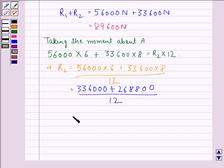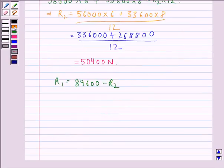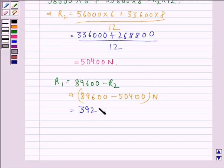That equals 50,400 N. Then R1 equals 89,600 minus R2, which is 89,600 minus 50,400 N, equals 39,200 N.